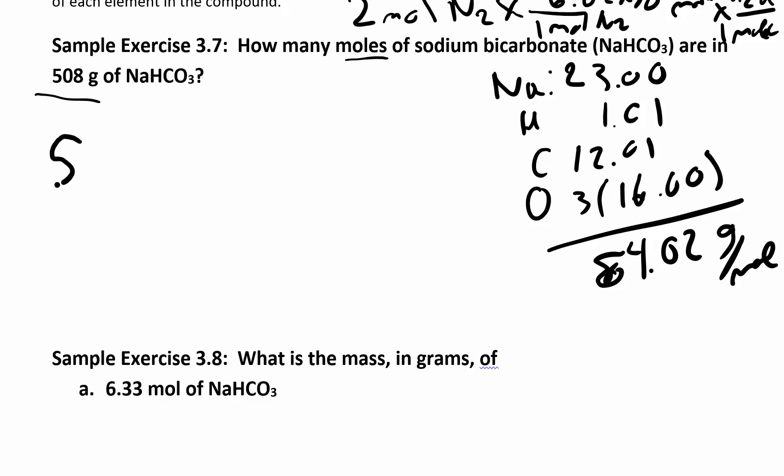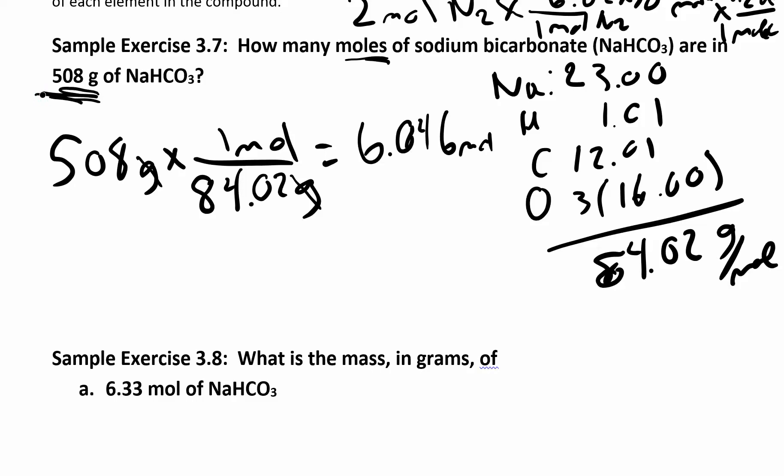Now I want to take 508 grams and divide by the molar mass. I want my units to cancel. If I have grams on top, I want grams on the bottom, grams per mole. So now I'm just going to take 508 and divide it by 84.02, and you should end up with 6.046 moles. We have three sig figs in our measured quantity here. The molar mass is not going to determine significant figures, just the measured quantity. So it rounds to 6.05 moles.